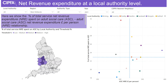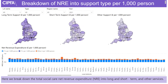We also provide a colour coded map highlighting the geographical changes with this percentage spend. Here we break down the net revenue expenditure into support types and show the values in pounds per thousand people such that differences in population size are accounted for.